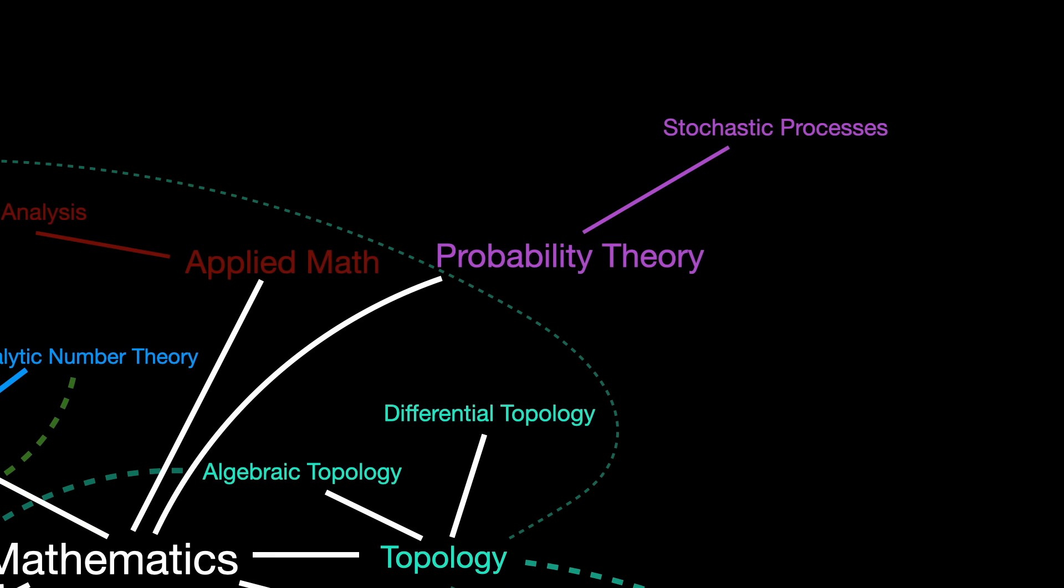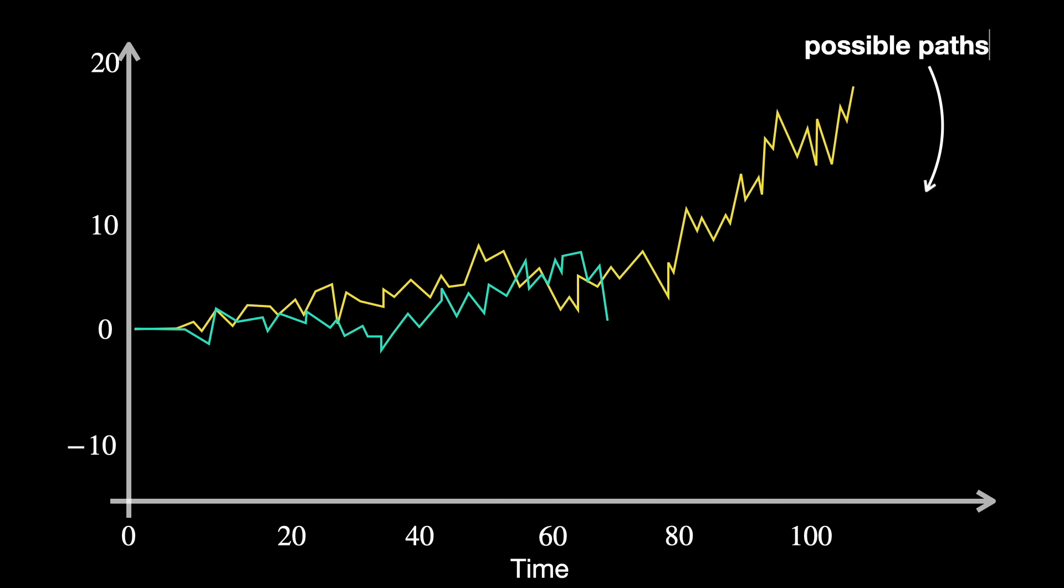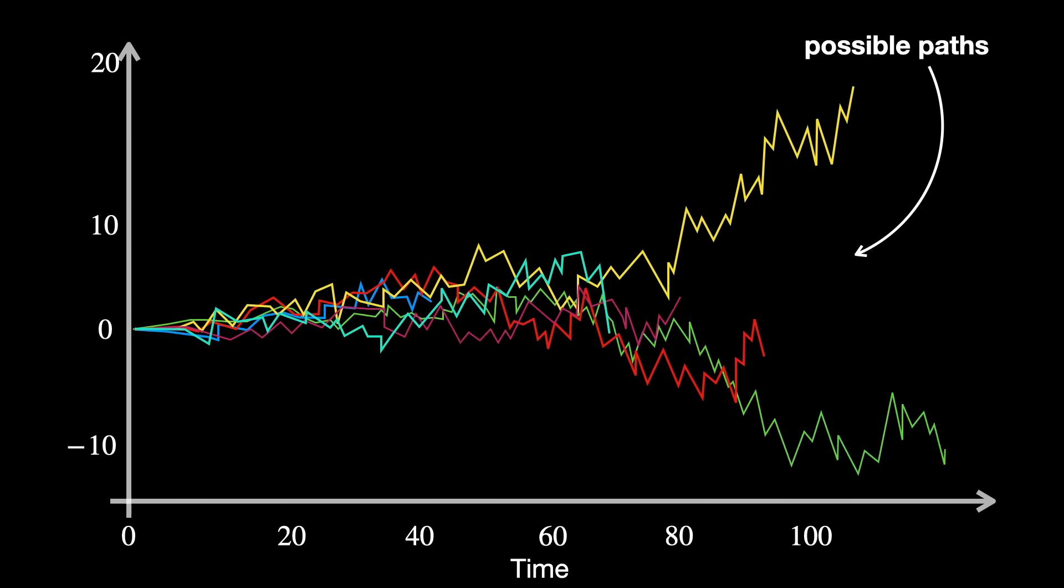Stochastic processes. The branch examines the mathematical models that describe the evolution of systems influenced by random variables over time. This field is super important in understanding phenomena where outcomes are inherently uncertain and can evolve in complex and non-deterministic ways.